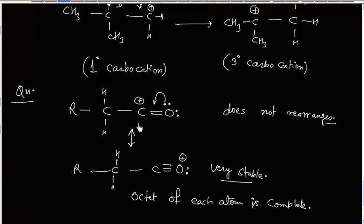In this lecture we discussed four important points: first, ring expansion — carbocations can rearrange by ring expansion; second, ring contraction; third, in migration the migrating group does not change its configuration — it retains the same configuration; and finally, the acylinium ion does not undergo any rearrangement.